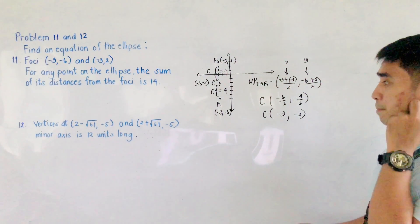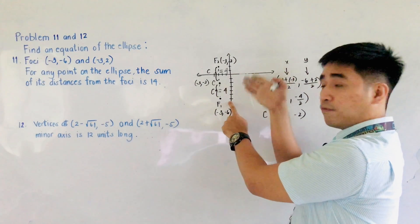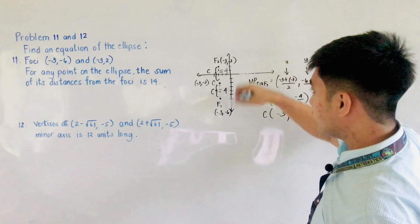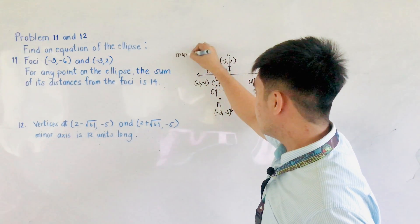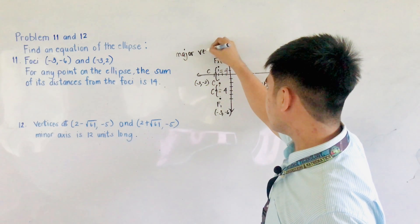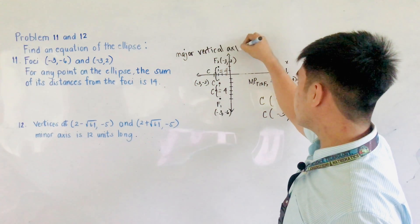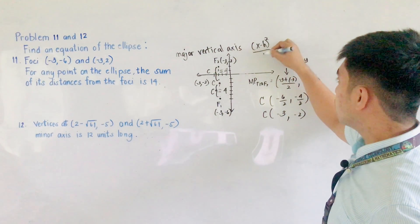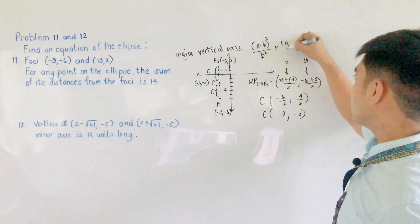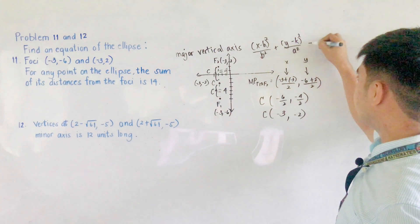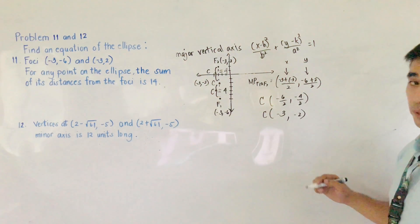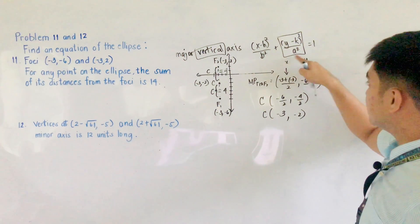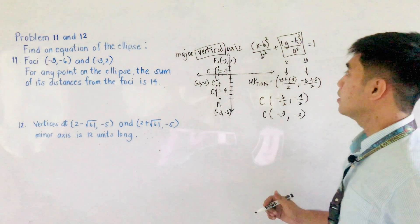Since this is a major vertical axis, the formula we will use is: (x minus h) squared over b squared plus (y minus k) squared over a squared equals 1. In this formula, a squared comes with the y squared term, and a is greater than b.